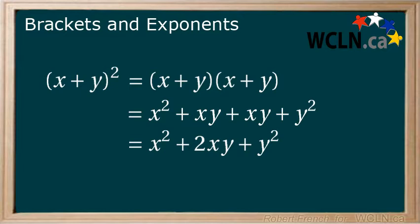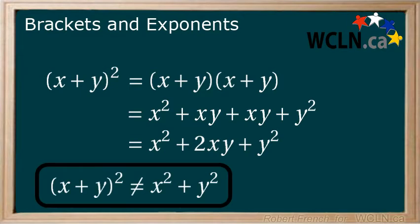Now, if we had just applied the exponent of 2 to the x and the y, we would have x squared plus y squared. You can see that we are missing the 2xy and therefore have the wrong answer. This is an easy mistake to make.